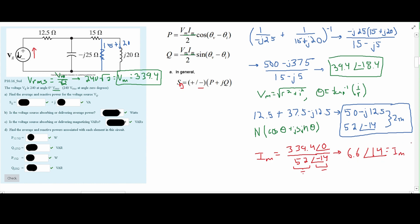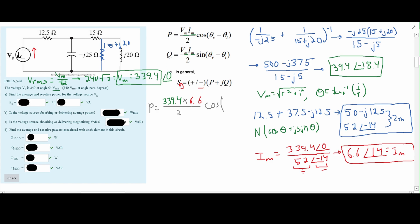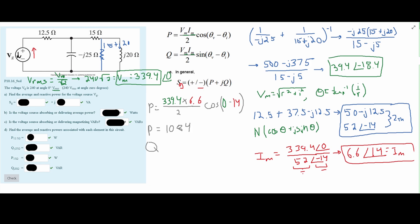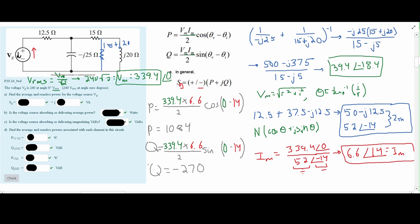Now we can solve for S of G. Starting with P: P = (Vmax × Imax / 2) × cos(θ_V - θ_I) = (339.4 × 6.6 / 2) × cos(0° - 14°). The angle of our voltage is 0 degrees and the angle of Imax is 14 degrees. For Q, the formula is almost the same but uses sine instead of cosine: Q = (339.4 × 6.6 / 2) × sin(0° - 14°) ≈ -270 VAR.